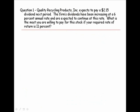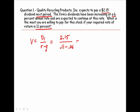Question number 1. Quality Recycling Products expects to pay a $2.15 dividend next period. The firm's dividends have been increasing at a 6% annual rate and are expected to continue at this rate. What is the most you're willing to pay for this stock if your required rate of return is 11%? Starting with our model, V equals D1 over R minus G. We are given D1 of $2.15, R of 11%, and G of 6%. Solving the equation, we get a stock price of $43.